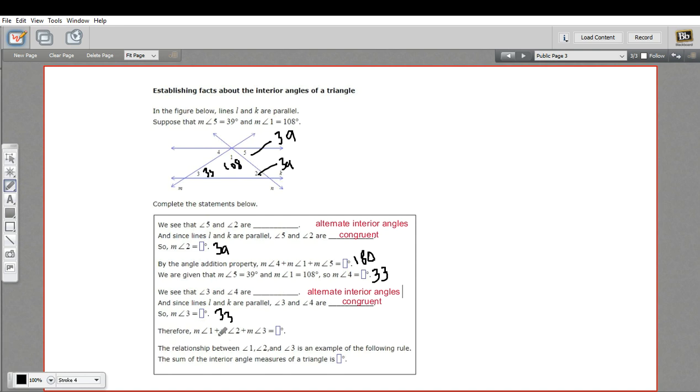And it says, therefore, the measure of angle one plus the measure of angle two plus the measure of angle three, those are all the measures inside this triangle. Well, they add up to 180. We can just add them: 33 plus 39 plus 108 is 180. We probably knew that already though. We know that the angles inside a triangle add up to 180 degrees.